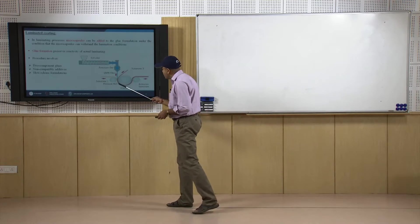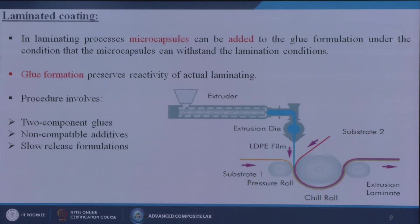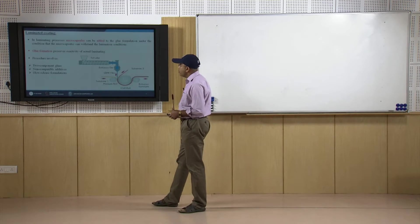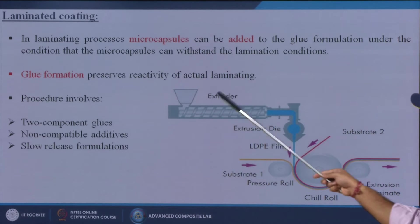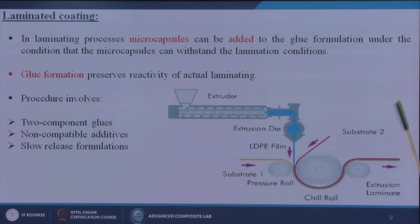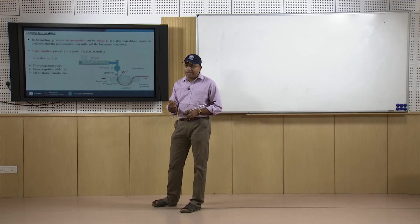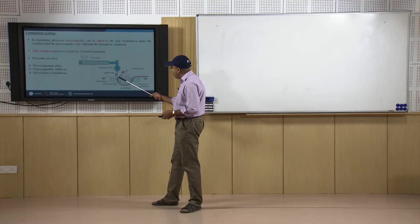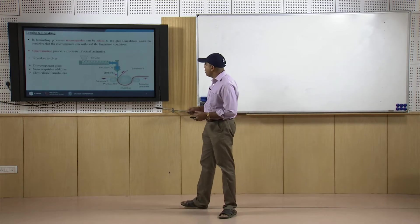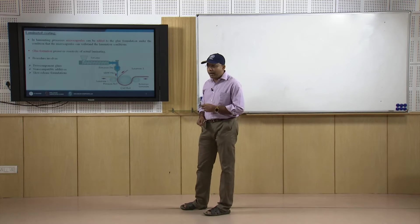The next one is called laminated coating, which involves layer-by-layer coatings onto the substrate. In the lamination process, microcapsules can be added to the glue formulations under conditions where the microcapsules can withstand the lamination. Glue formation preserves reactivity; procedures involve two-component glues, non-compatible additives, and slow release formulation. An extruder with a hopper receives different materials, which pass through heating zones and melt. Through a nozzle, the material comes out as a film structure and is applied layer by layer onto the substrate — that is why it is called laminated coating.